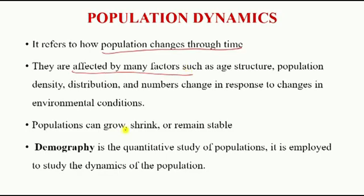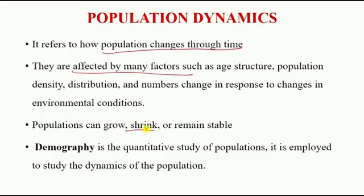Population can also shrink. When a population is shrinking, either we have a lot of competition and therefore the environment is not conducive, there's a lack of breeding sites, and therefore organisms will either move out or would die.